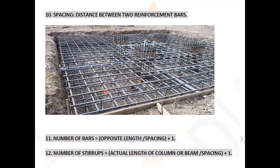To calculate the number of bars: suppose the length is 15 meters and spacing is 0.2m, then 15 / 0.2 = 75, plus 1 = 76. The formula is: number of bars = (length / spacing) + 1. Number of stirrups = actual column or beam length divided by spacing, plus 1.